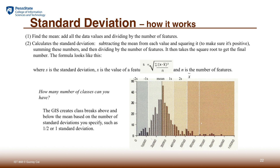Calculating class breaks by the standard deviation scheme is not hard. First, figure out the mean by adding all values and dividing by the number of features. The second step is to calculate the standard deviation, which is the square root of the variance. You can then figure out the class break by counting where one standard deviation away from the mean falls — that becomes the breaking value. You can define class break intervals by one full standard deviation, or alternatively by half of the standard deviation as the interval.